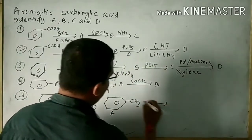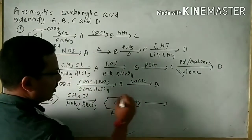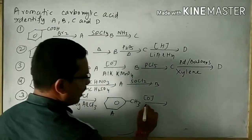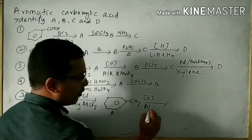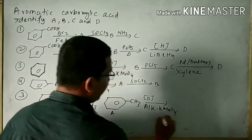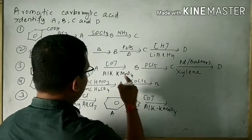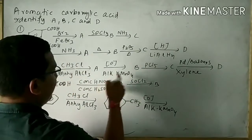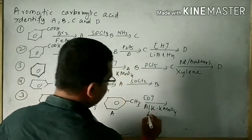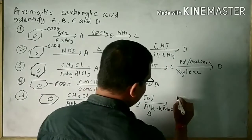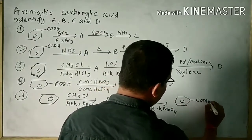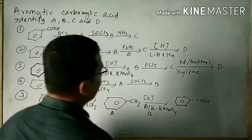Now the product A is subjected to oxidation with alkaline KMnO4, and heating is also needed. Then benzoic acid is formed.